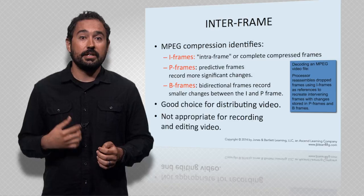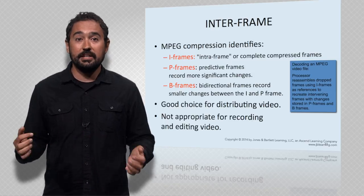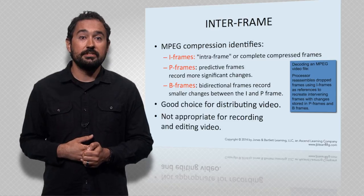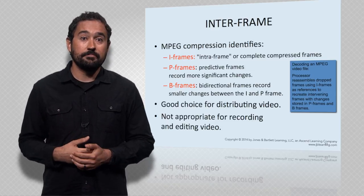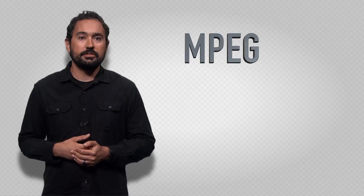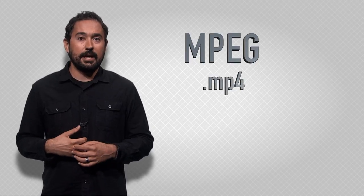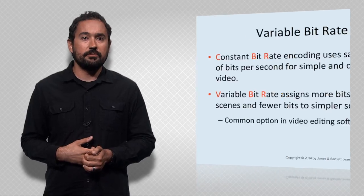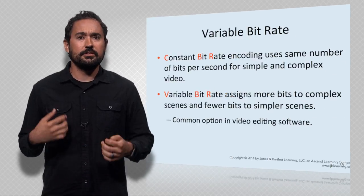Inter-frame compression eliminates redundant content between frames, saving only the changes between the frames. This can reduce file size and still keep quality depending on what is being recorded. MPEG is a popular and widely used video codec that stands for Motion Picture Experts Group. It uses different types of frames — I-frames, P-frames, and B-frames — where each one is used based on the changes in the frames. Please review these in more detail via your textbook. MPEG is one of the best choices for distributing video, and the new standard is MP4.